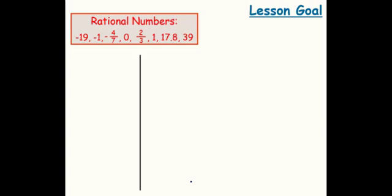When we're looking at examples of rational numbers, in the word rational, we should see the word ratio. A ratio is a comparison of two numbers by division. So this is why we can write this over one, and we're just comparing these two numbers by division. So all of these are rational numbers.